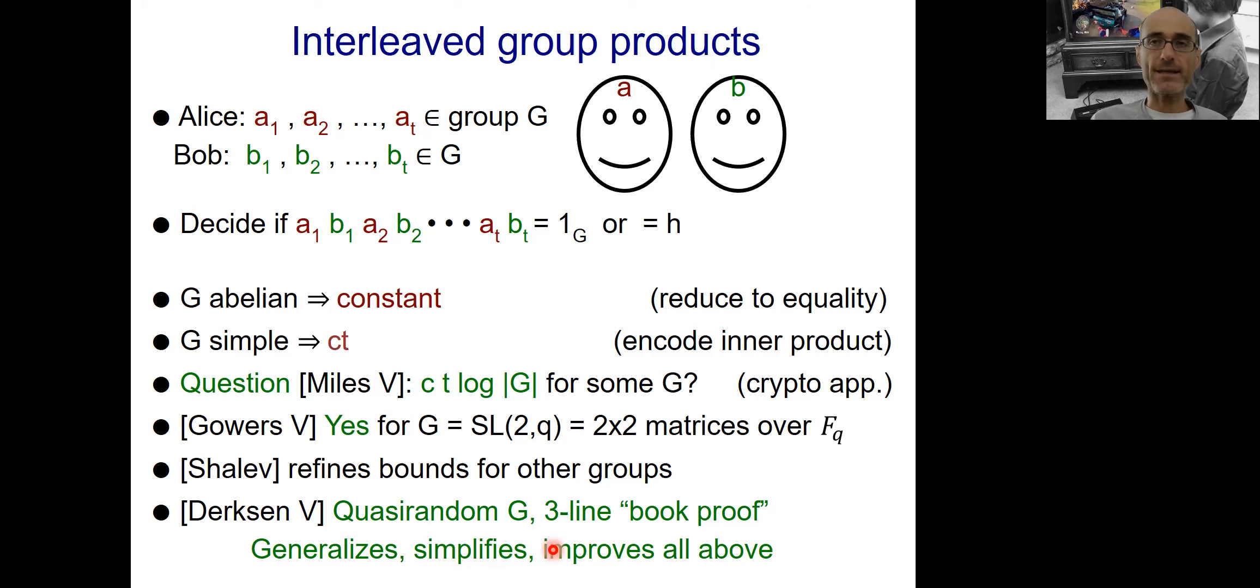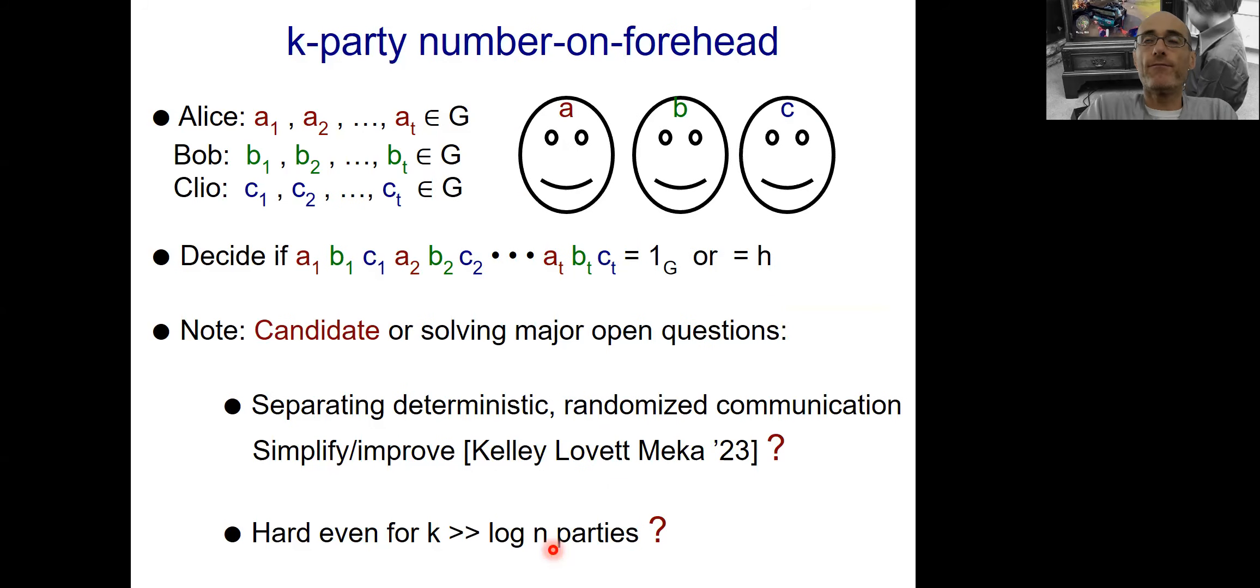So this was the case for two parties. Let's now move to the multi-party setting. And we work in the number-on-forehead setting by Chandra, Furst and Lipton. So here the picture only has three parties, but in general, I'm going to have k parties for large k. So here we have Alice, Bob, and Cleo. Each one gets a tuple of elements. And the setup, as you might know, is that Alice has A on the forehead, so she can see B and C, but not A and so on. So this overlap of information, as is well known, makes this model extremely challenging, extremely powerful, and very useful in a variety of contexts. And this is one of them. So again, they want to solve the interleaved group product, A1, B1, C1, A2, B2, C2, and so on.